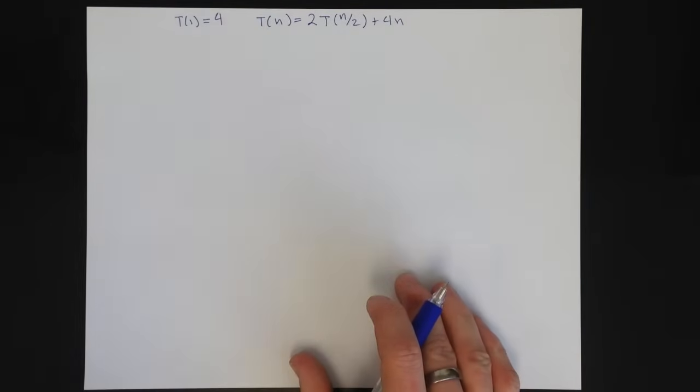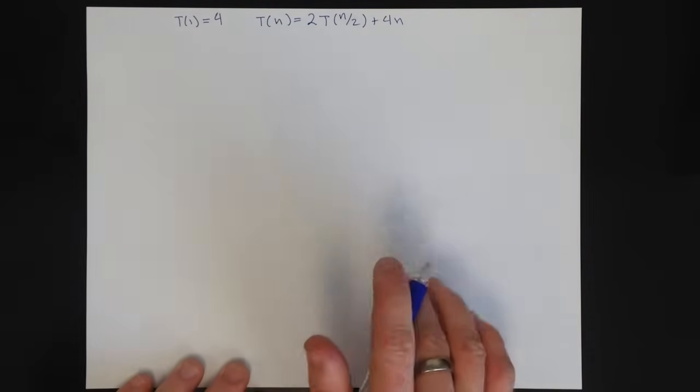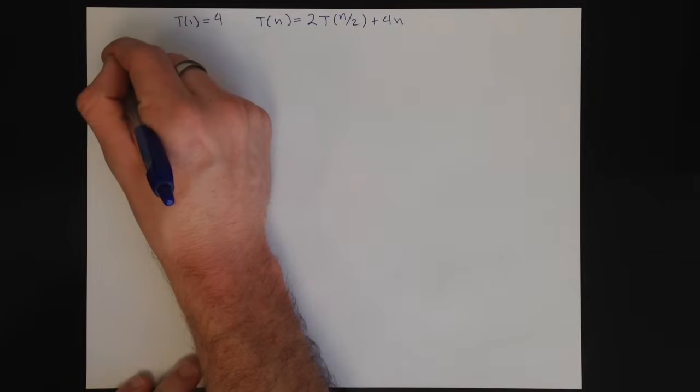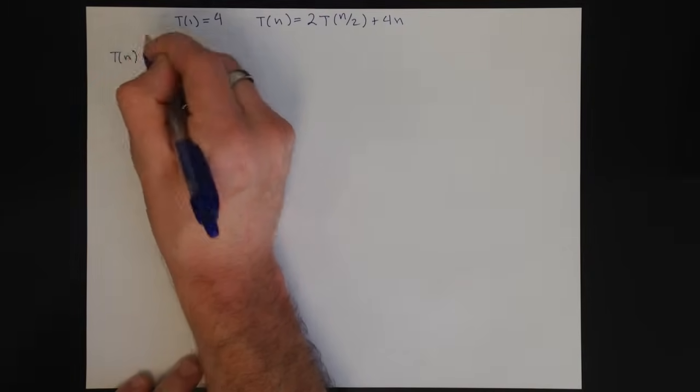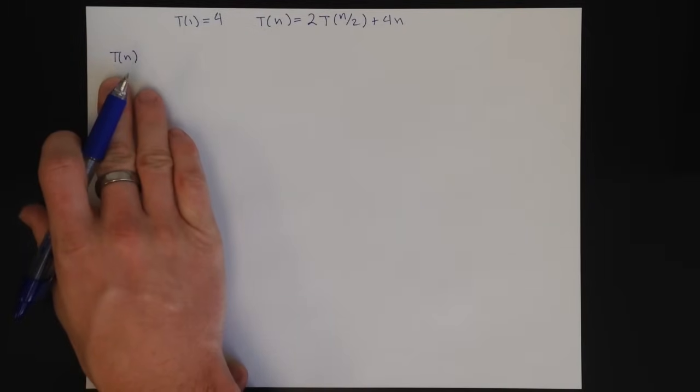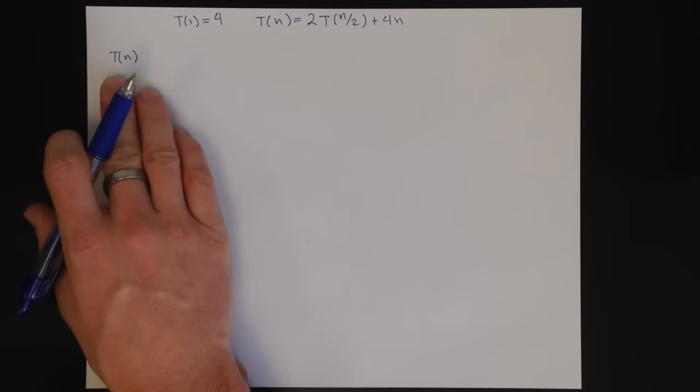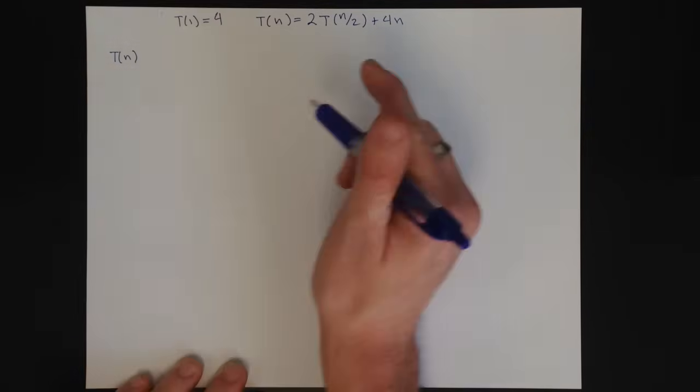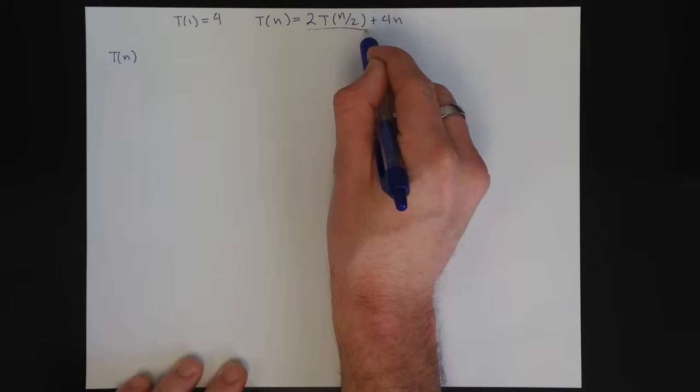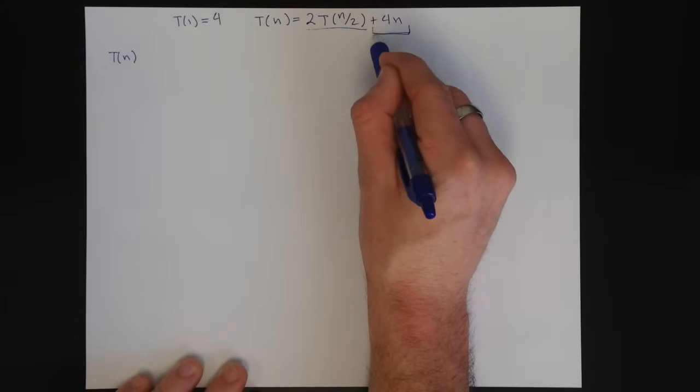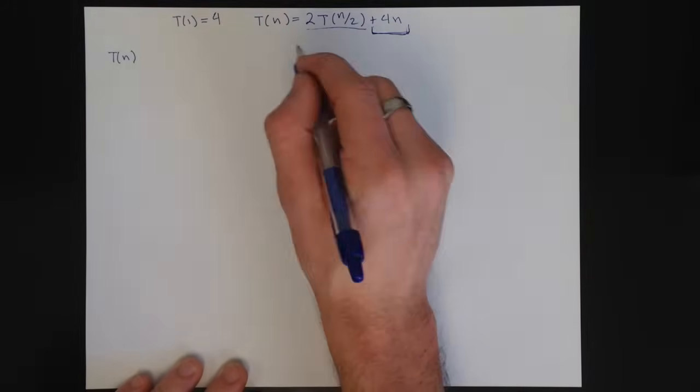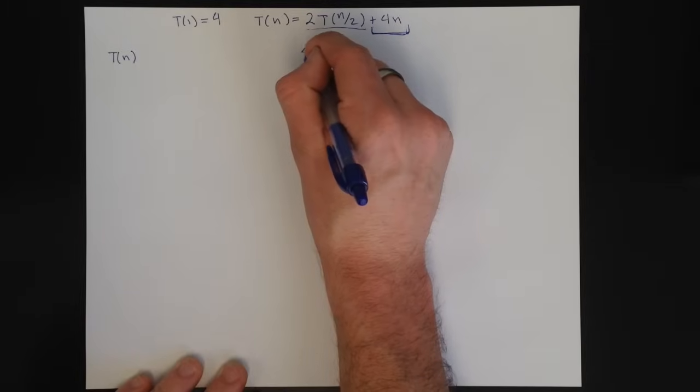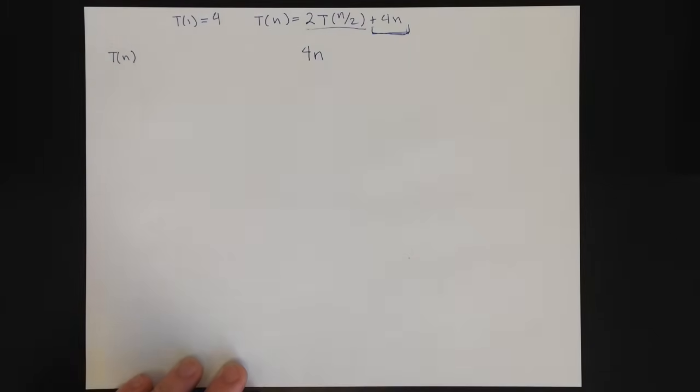Remember the way the tree method works is I'm going to start by asking at level T(n), besides the recursive call, how many operations are performed? So I'm ignoring the recursive call and looking at what is left over. What is left over is 4n. So at this level, I'm going to do 4n operations.